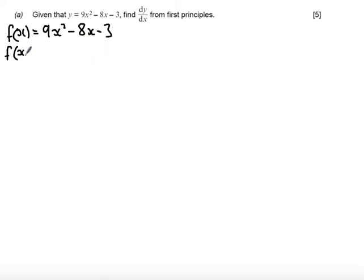Secondly, is to find f of x plus h, which is found by substituting x plus h in for every x term. So, I get 9 times x plus h squared minus 8 times x plus h minus 3.